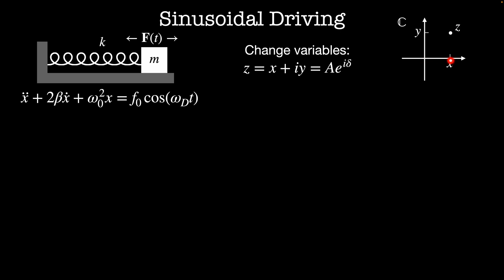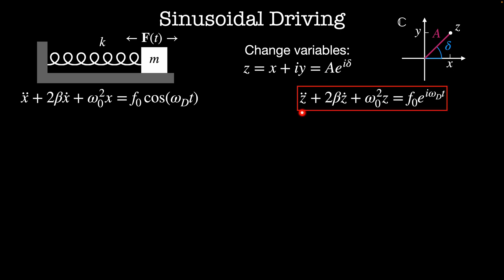In the complex plane, the x component is the real part of z and the y component is the imaginary part. I can also think of this in polar coordinates, where a is the magnitude of z and delta is its phase, so I can write z as a e to the i delta. Our equation of motion then becomes z double dot plus 2 beta z dot plus omega naught squared z equals f naught e to the i omega_d t. We solved the homogeneous version in the last video, so we're just going to focus on finding a particular solution.